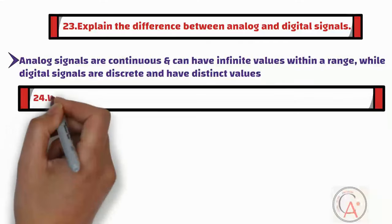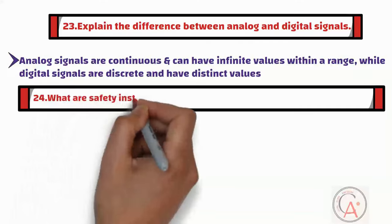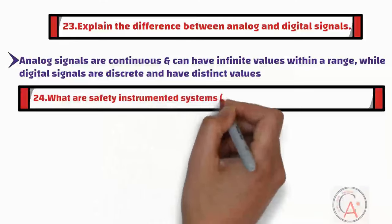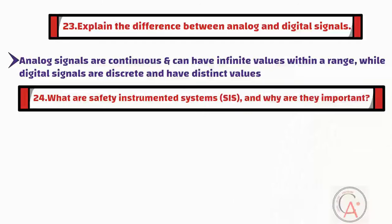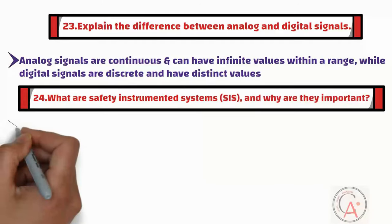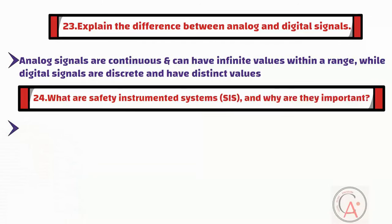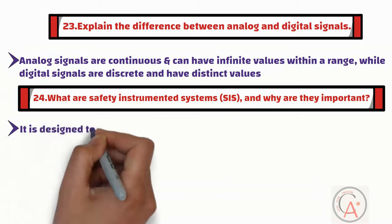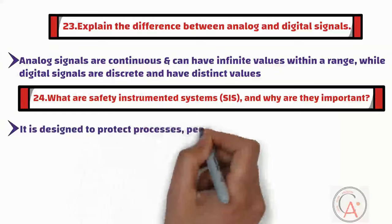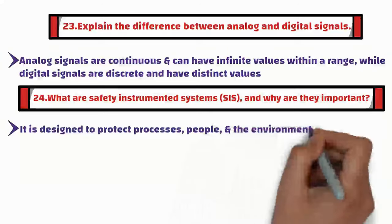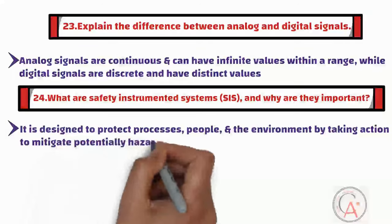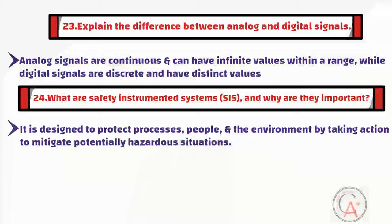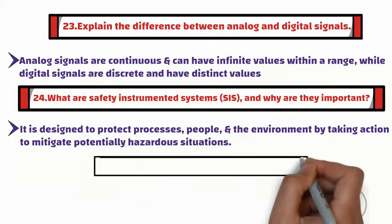The twenty-fourth question is: what are safety-instrumented systems or SIS and why are they important? SIS is designed to protect processes, people, and the environment by taking action to mitigate potentially hazardous situations. They are crucial for safety in industrial operations.